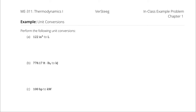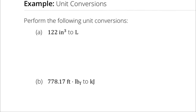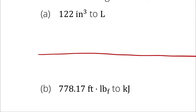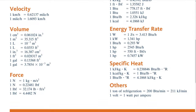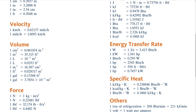To get a bit more practice with dimensional analysis, let's try some unit conversions, beginning with a conversion from cubic inches to liters. My dimensional notation requires that I draw a big horizontal line, and I can write 122 cubic inches, then I will multiply by one in different forms until I get to liters. If I go into my conversion factor sheet and look in volume, I recognize that both cubic inches and liters are representations of volume, so maybe there's a direct conversion here.